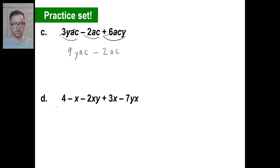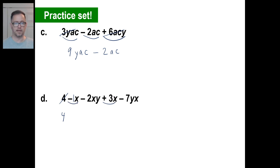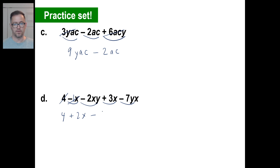For D: we start with a 4, and there's nothing else to add to 4, so bring it down. There's an x and another x — negative 1x plus 3x gives 2x. If I have negative 2xy and negative 7xy, that means I have negative 9xy. And that's it — three terms in that expression: 4, plus 2x, plus negative 9xy.